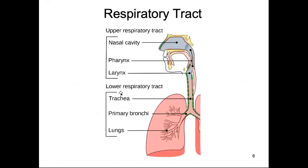The respiratory tract is called a tract because it's basically one continuous tube. Unlike the digestive system, it doesn't have a different entrance and exit — the entrance and exit are the same, which is your nose and your mouth. In the upper respiratory tract, we have the nasal cavity and the mouth, and they converge at the pharynx, which is basically the throat. When we breathe, the epiglottis — that structure that closes when we're swallowing food — stays open, so air goes past that down into the larynx, which is basically where our vocal cords are housed. We sometimes call it the voice box.